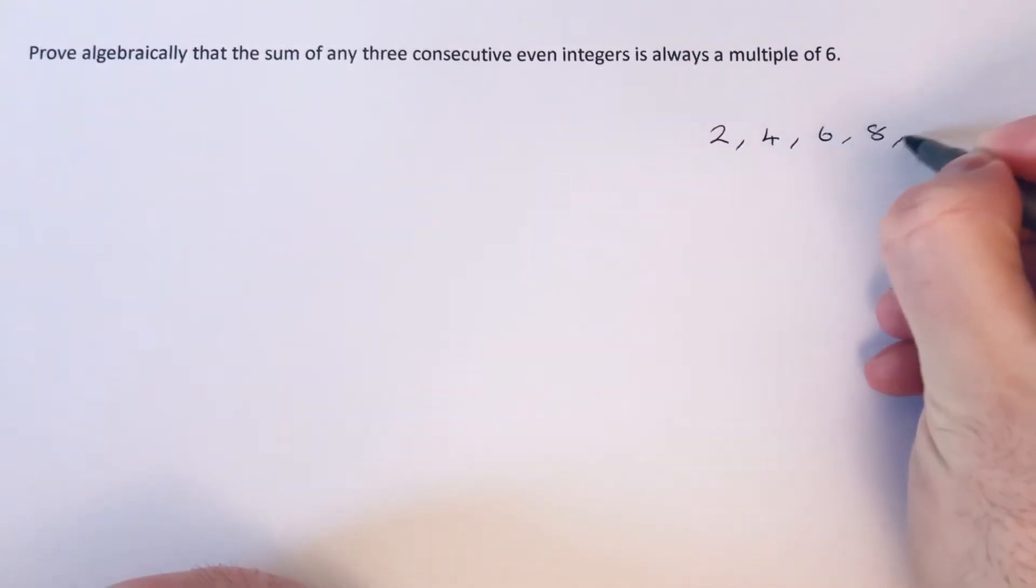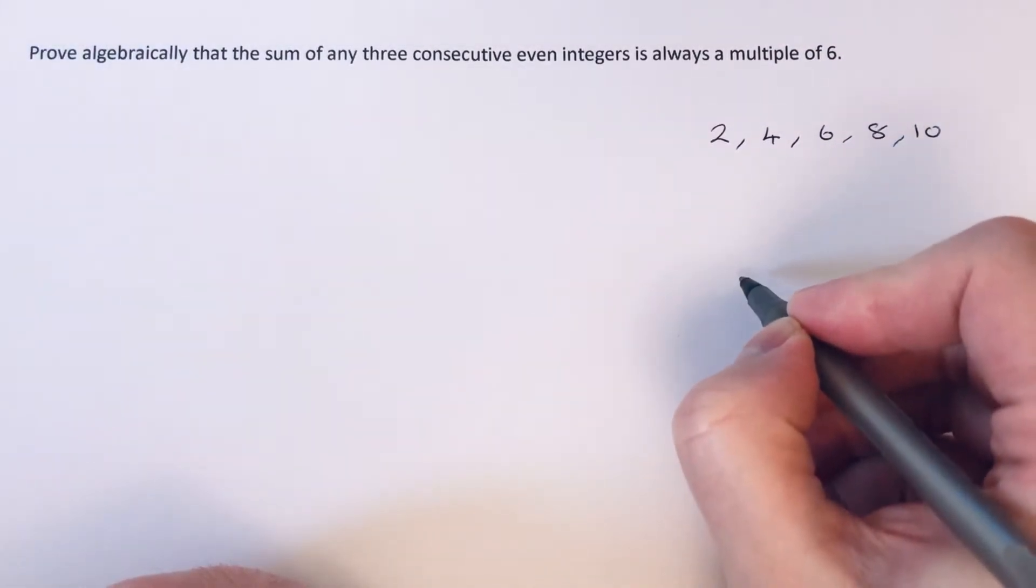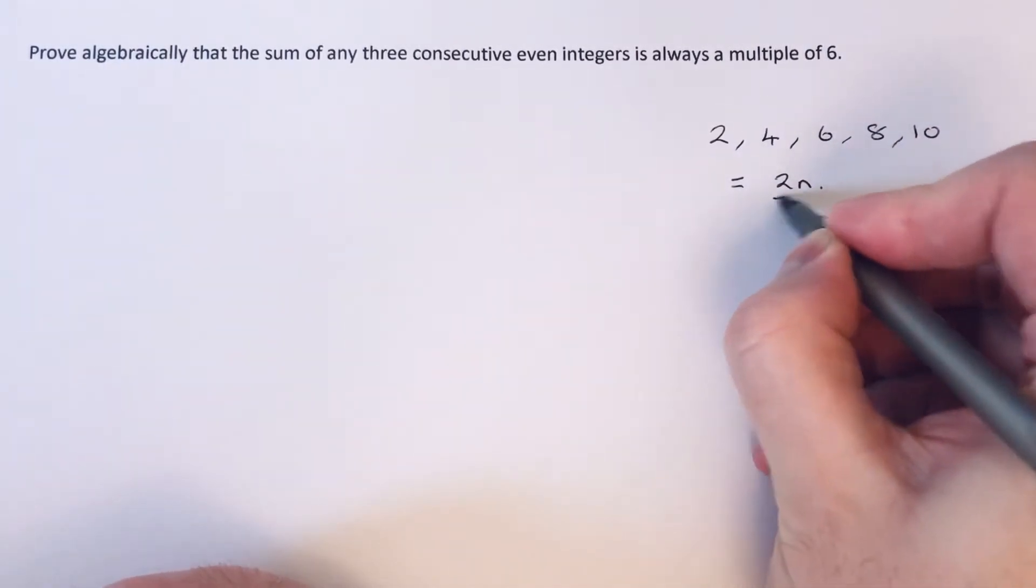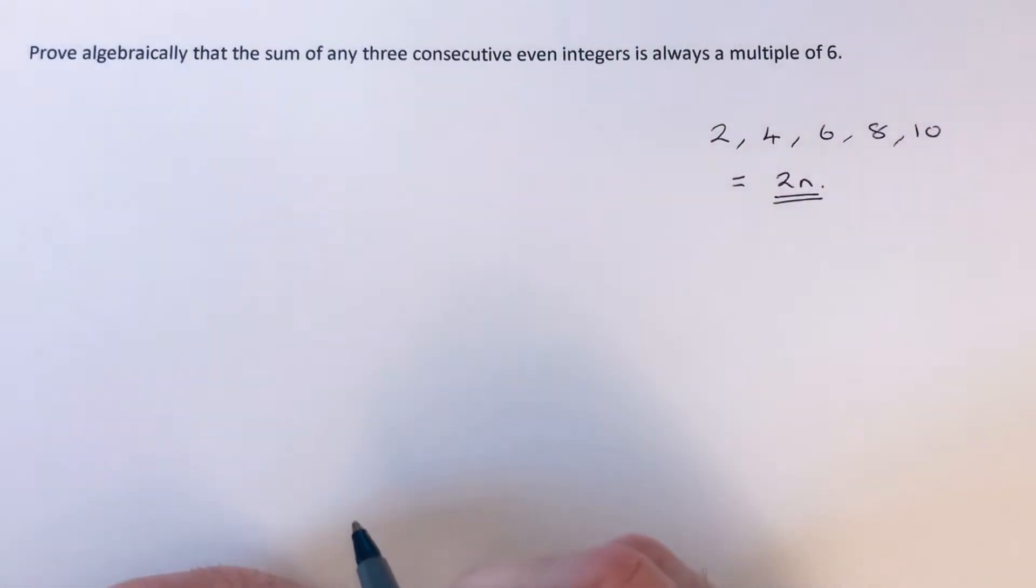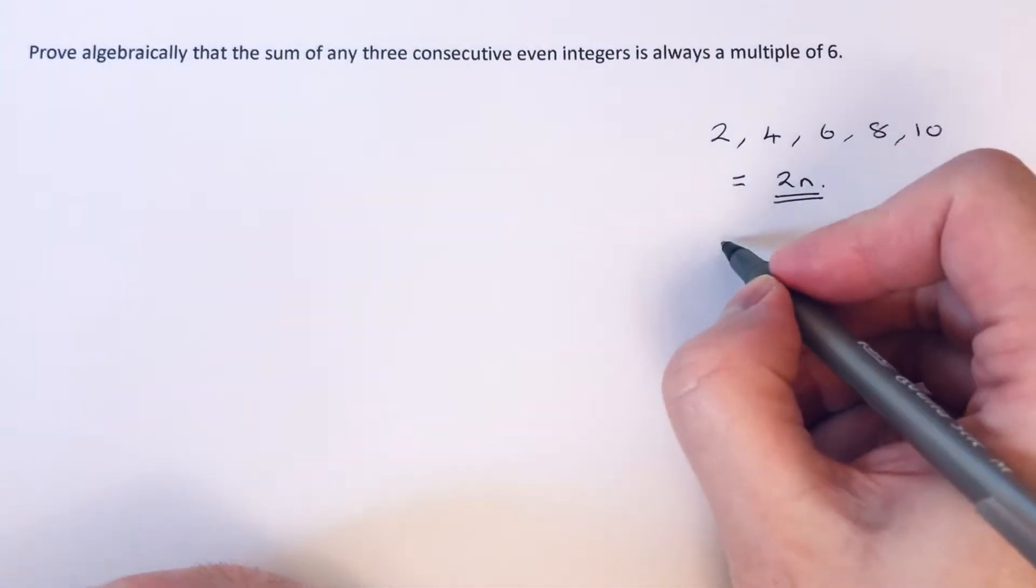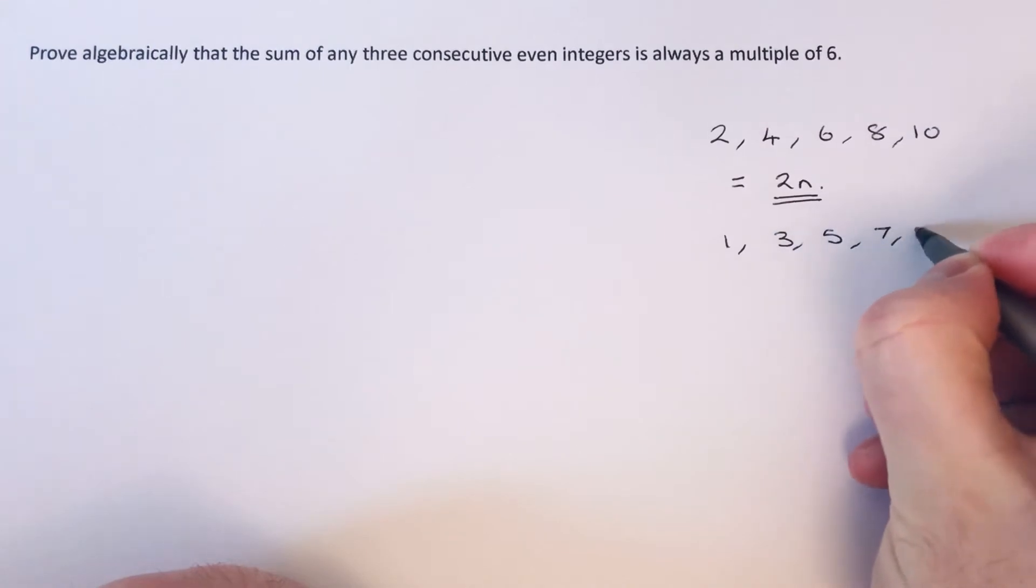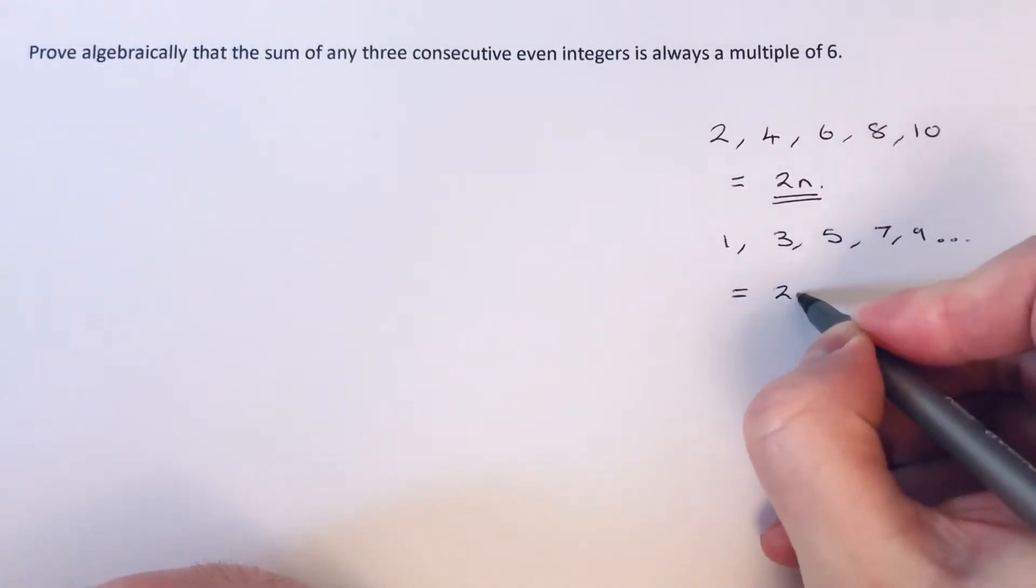The even number sequence 2, 4, 6, 8, 10 can be represented by 2n. That's the nth term of that sequence. Also, if you have an odd number sequence, the nth term of the odd numbers would be 2n minus one.